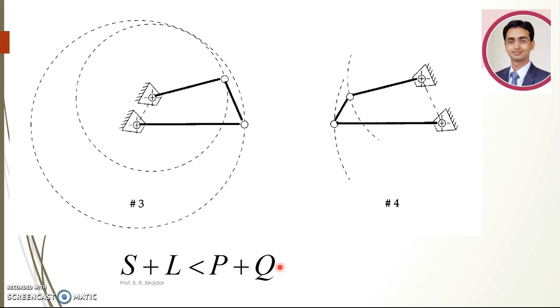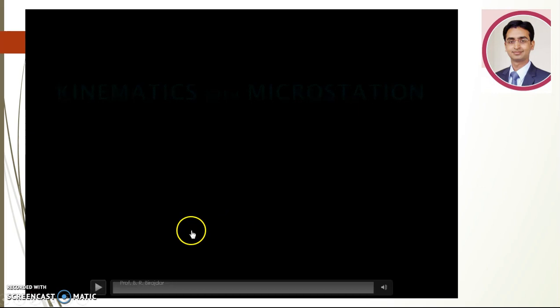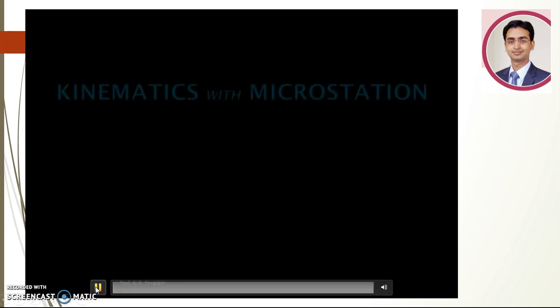Which is the best for all mechanics, because in most cases we are using a prime mover as an electric motor, and the electric motor has rotary motion. And to utilize that, we should have a link with rotary motion. That's why we need to satisfy Grashof's law.